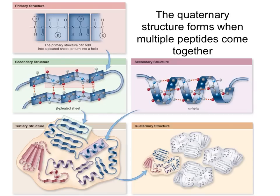Some proteins might then, after they're folded into their tertiary structure, come together with other peptides. So these are other amino acid sequences that form a quaternary structure. So not all proteins form this. This is just separate proteins coming together and forming a larger protein that is called the quaternary structure.